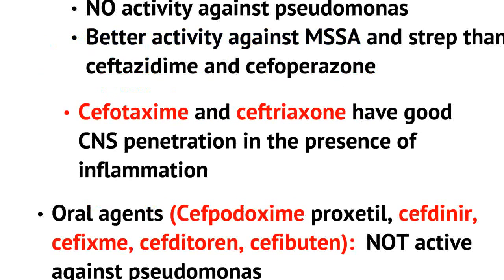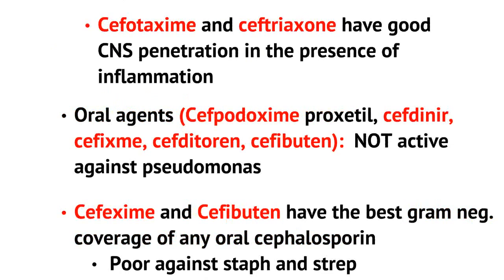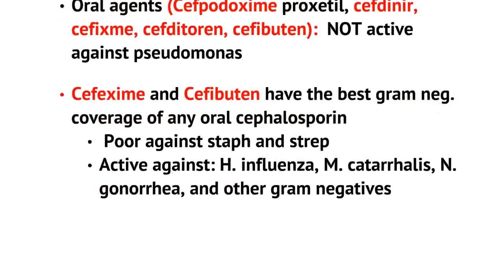Cefotaxime and ceftriaxone do have good CNS penetration in the presence of active inflammation or meningitis, which is why we generally include them as part of our cocktail of antibiotics in treating meningitis. Oral agents do not have activity against Pseudomonas. Cefixime and cefibuten have the best gram-negative coverage of any oral cephalosporin, but they have poor activity against Staph and Strep. These two medications do have activity against Haemophilus, Moraxella, Neisseria, and other gram-negatives.